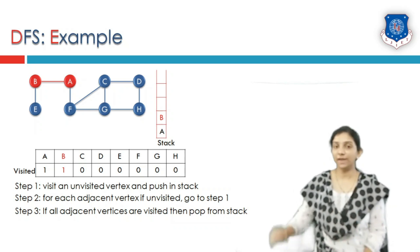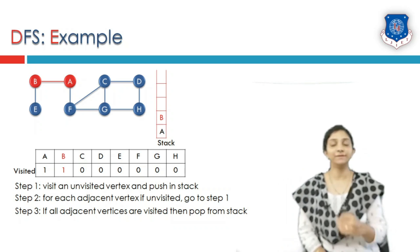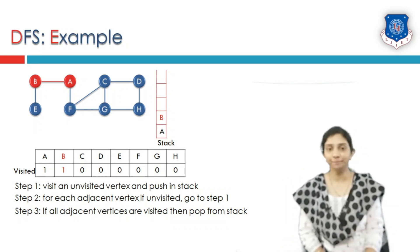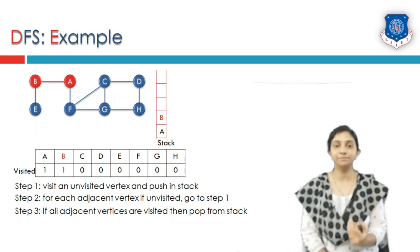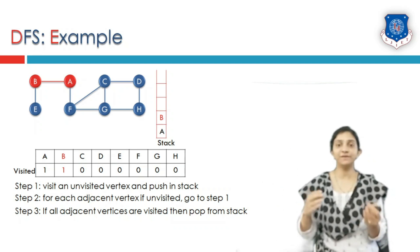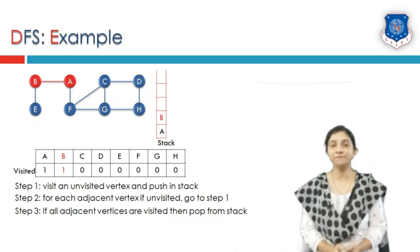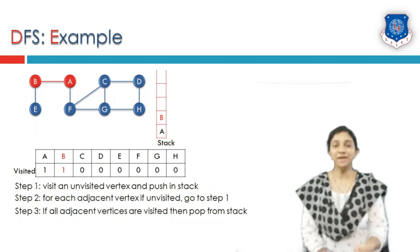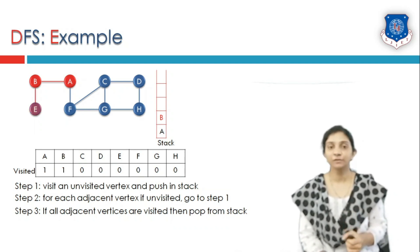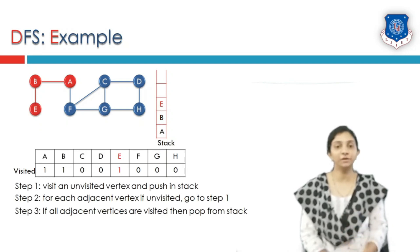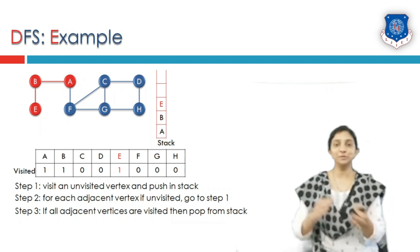To understand the working: vertex A has two adjacent vertices, and we will first take the first adjacent alphabetically, which is B. You can also take F, but here I am working alphabetically. B is the first adjacent of A, so we visit B — its visited value is set to one and it is pushed inside the stack. Now B is the current vertex. B has two adjacent vertices: A and E. A is already visited, so we select the other adjacent vertex E. E gets visited — its visit value is set to one and it is pushed inside the stack.